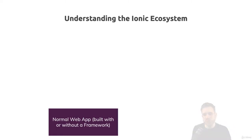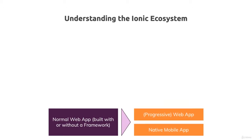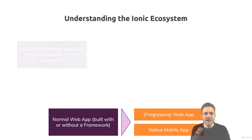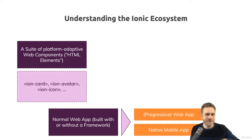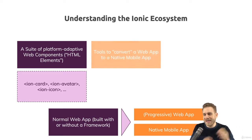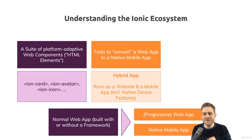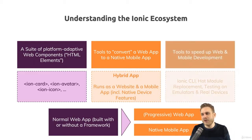You're building this web app and you want to keep it as a web app, possibly a so-called progressive web app with cooler features — fast and reliable interaction. And you also want to have a native mobile app. You have this suite of web components, which look like normal HTML tags, except they aren't. And then you have tools to convert this app, plus tools for development, like the Ionic CLI.